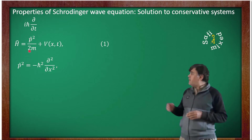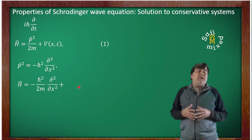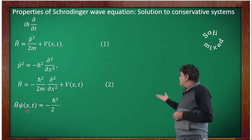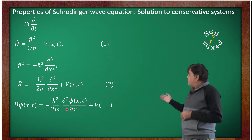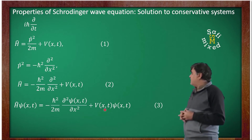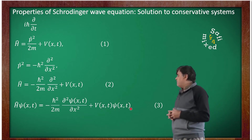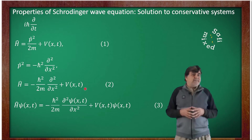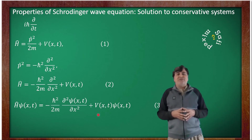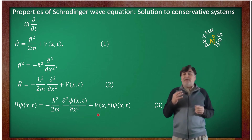If we substitute the operator form of P-squared, which is minus h-bar squared partial squared over partial x squared, into this equation, we can rewrite it. Applying this equation to a wave function, the result is H applied to ψ equals minus h-bar squared divided by 2m times partial squared over partial x squared applied to ψ, plus V(x,t) multiplied with the wave function ψ. The right side of this equation